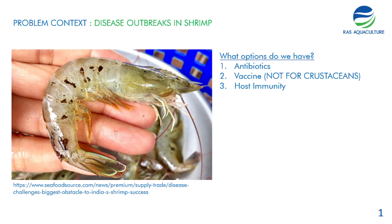The second option is you could also use a vaccine. This is available for species like barramundi, grouper, and even tilapia. But that's not the case for crustaceans, because crustaceans' immune system does not support the use of vaccines. So it's not really available for species like shrimps or crabs.